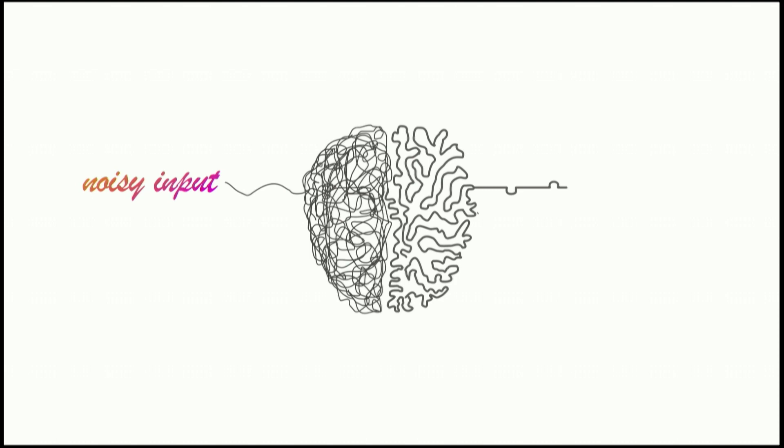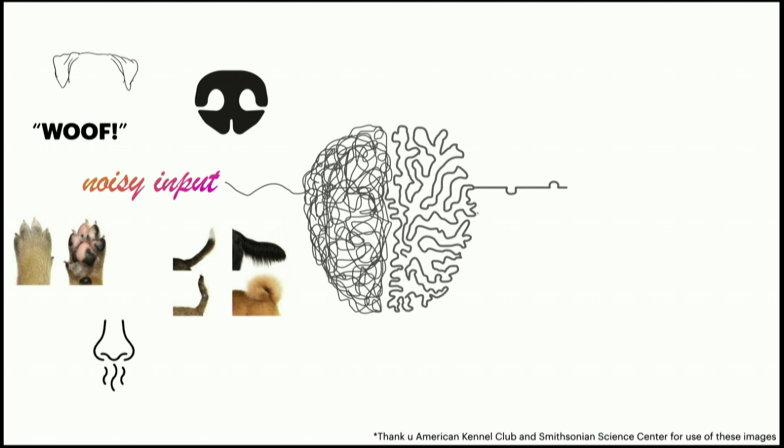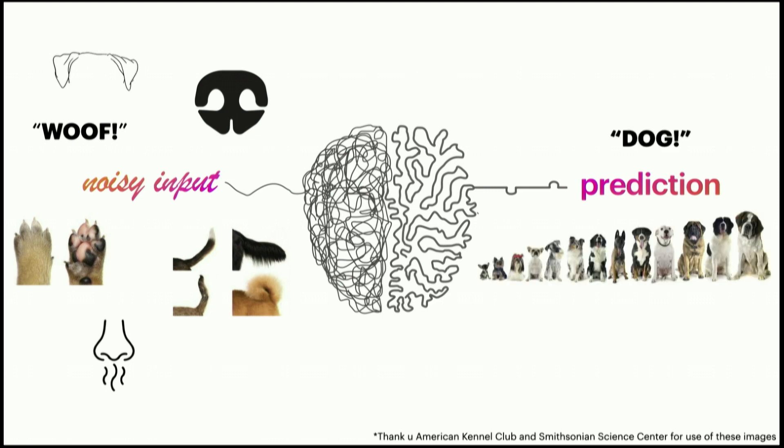We take noisy input, like paws and the tail and ears and the sound of bark and the smell of a creature, and we're somehow able to make a prediction — it's a dog! Dogs don't really always look like dogs; there's a lot of variability. And they certainly might not smell alike — I have smelled some nice dogs and I have smelled some that rolled in something dead.